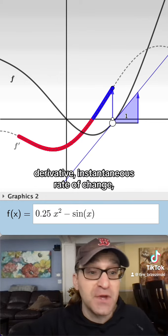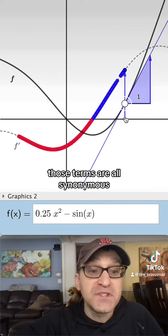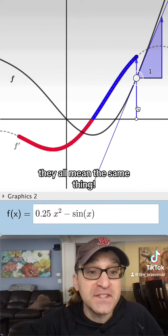derivative, instantaneous rate of change, slope of tangent line, those terms are all synonymous. They all mean the same thing.